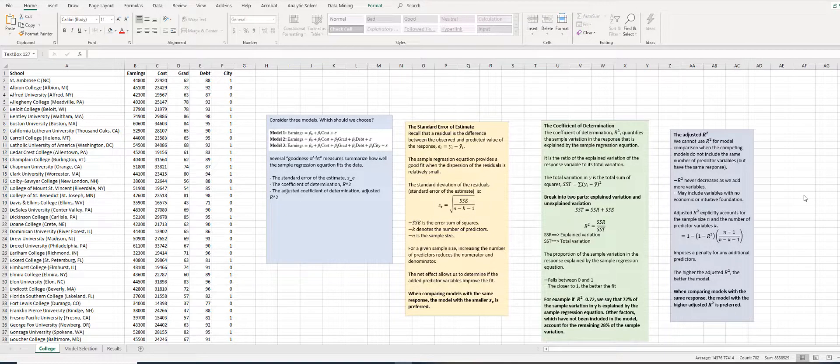By simply observing the sample regression equation, we cannot assess how well the predictor variables explain the variation in the response variable. However, several objective goodness of fit measures do exist that summarize how well the sample regression equation fits the data.